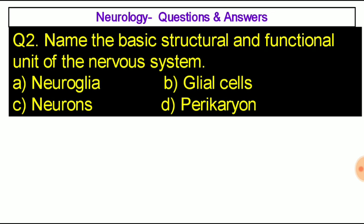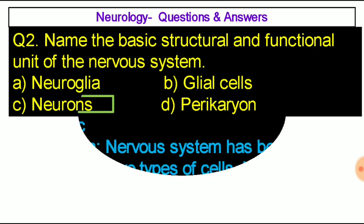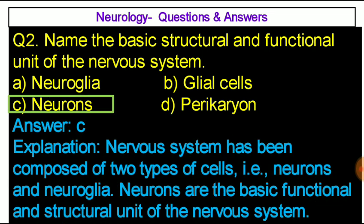Question number two: Name the basic structural and functional unit of the nervous system — option A: neuroglia, option B: glial cells, option C: neurons, option D: pericardium. The correct answer is option C, neurons. The nervous system is composed of two types of cells: neurons and neuroglia. Neurons are the basic functional and structural unit of the nervous system.